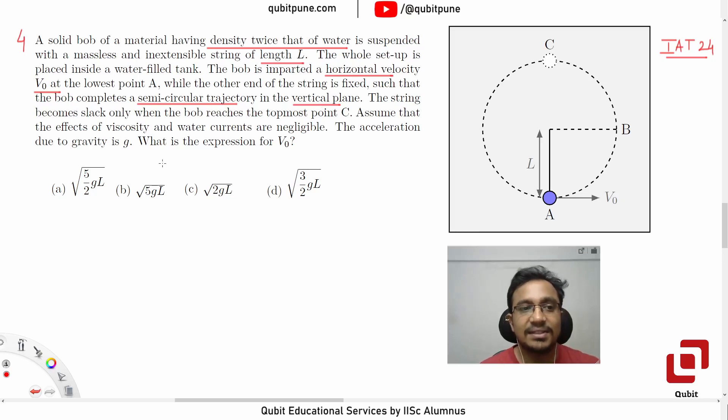The string becomes slack only when the bob reaches the topmost point C. Assume that the effects of viscosity and water currents are negligible. The acceleration due to gravity is g. What is the expression for V₀?